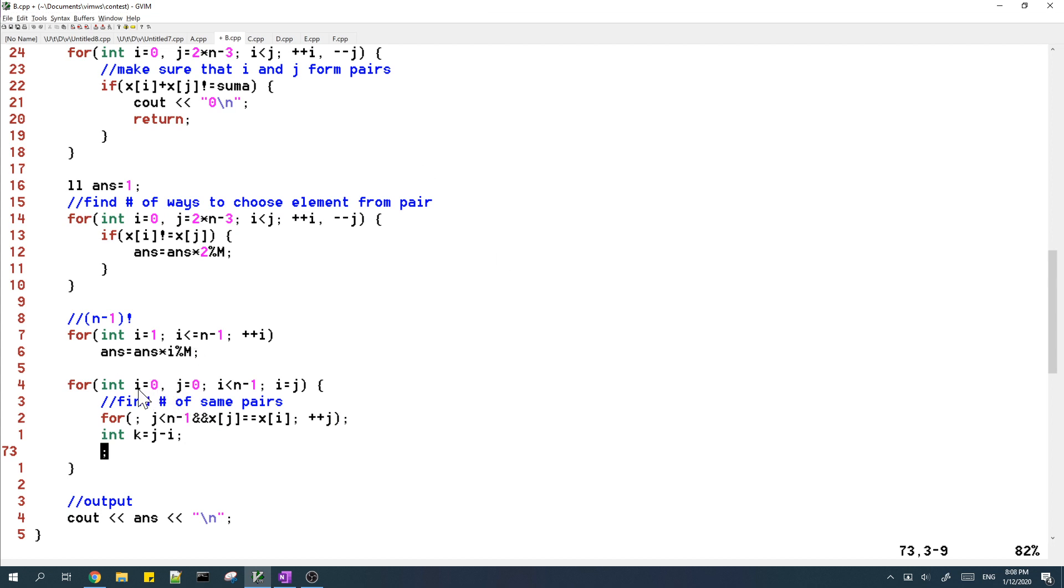Basically, we start with two pointers at the first pair. I and J both start at 0. And then while the next pair in the array is the same as the current pair we're working with, we increment J. And we keep doing this until we find a different pair. So the number of same pairs that we get is k.